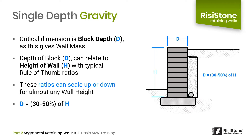We can relate the depth of the wall d to the height of the wall h. As the wall gets higher, we require the depth of the block, or wall mass, to be greater, since earth pressure increases with height. As a general rule of thumb, the depth of the wall typically must be at least 30 to 50 percent of the wall height h. For example, if a 50 percent depth-to-height ratio is required, a six-foot-high wall would need a three-foot-deep SRW unit, while a 20-foot-high wall would require a 10-foot-deep unit.